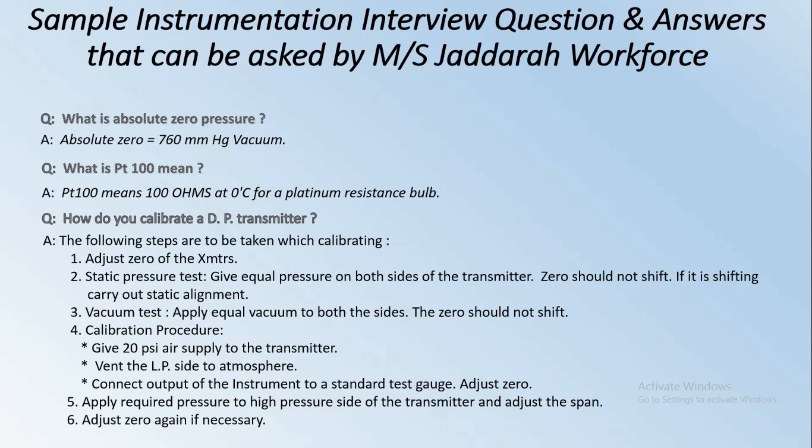First, adjust zero of the transmitter. Static pressure test: apply equal pressure on both sides of the transmitter — the zero should not shift. If it is shifting, carry out static alignment. Next, vacuum test: apply equal vacuum to both sides — the zero should not shift.